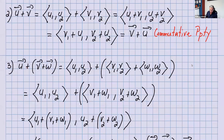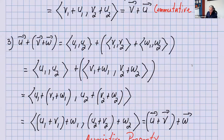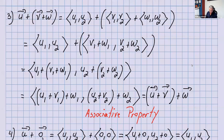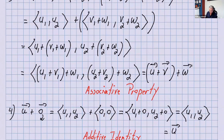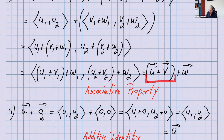Axiom three: U plus (V plus W) — use the components. Add the components inside the parentheses to get (V₁+W₁, V₂+W₂), then write it as (U₁+(V₁+W₁), U₂+(V₂+W₂)). Since these are just three numbers, you can change the placement of parentheses to get ((U₁+V₁)+W₁, (U₂+V₂)+W₂), which equals (U plus V) plus W. Associative property satisfied.